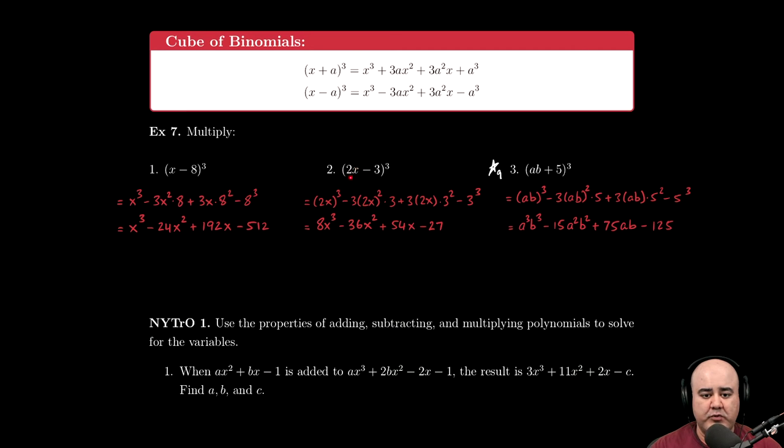Applying the formula, we cubed the first term, so here we have 2x, the quantity to the third power. Remember that with a minus, we have to alternate signs, so we have minus 3 times the square of the first, so 2x, the quantity squared, times the second.